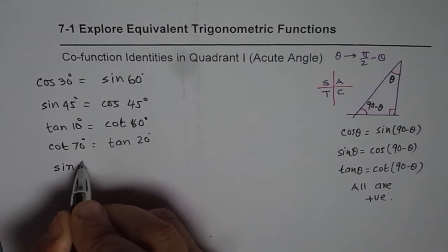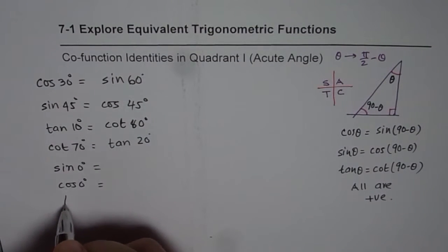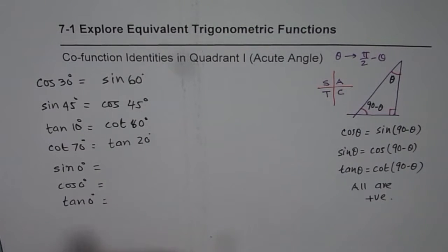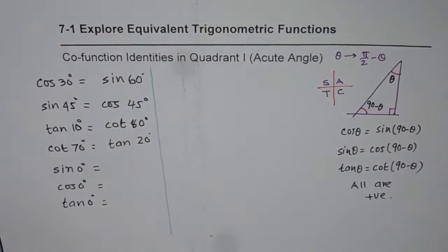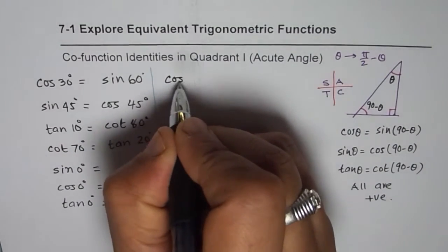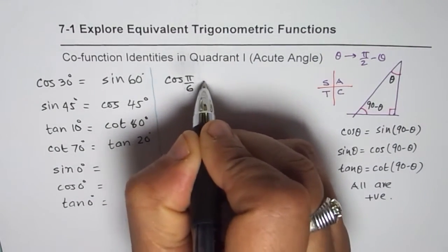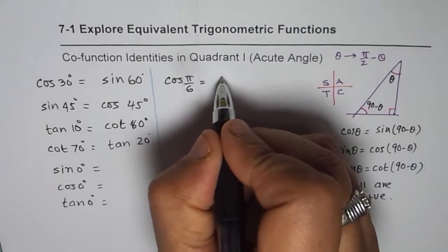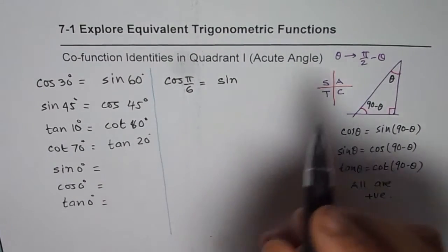Here are a few tricky ones: what is sine of 0 degrees, cos of 0 degrees, tan of 0 degrees equal to? Think about it while we work on radians. Now in radians, we'll write the same angles but in radians. If I say cos of pi by 6, it should be sine of pi by 2 minus pi by 6.